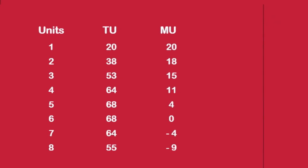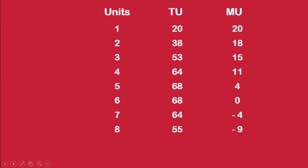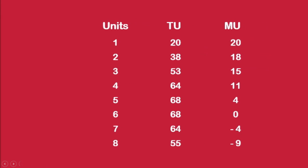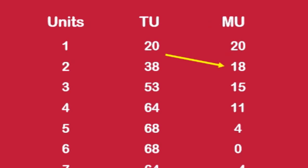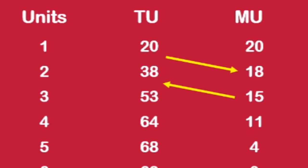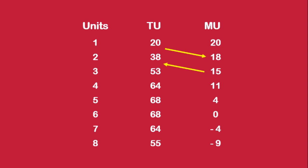This is all about the calculation of Total Utility and Marginal Utility. One important thing to keep in mind about Marginal Utility: it tells us the rate at which Total Utility changes. When Total Utility moves from 20 to 38, the rate of increase is 18 units. A Marginal Utility of 15 units shows the rate of increase of Total Utility from 38 to 53. This is important since the concept of Margin plays a very vital role in economic analysis.